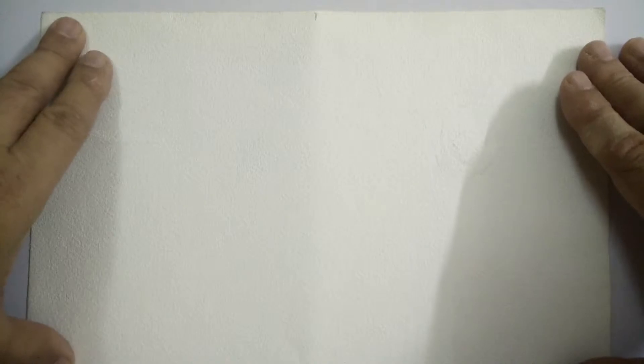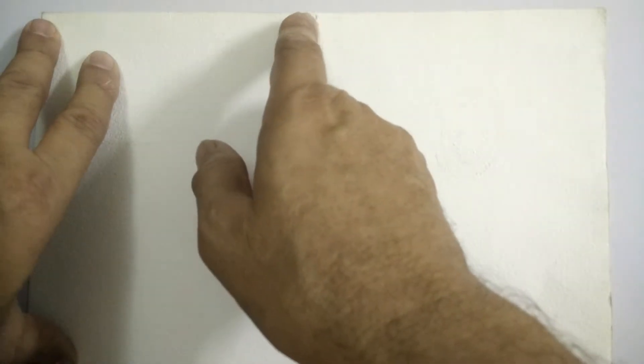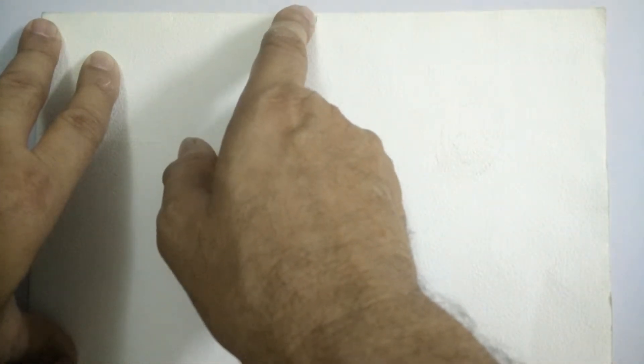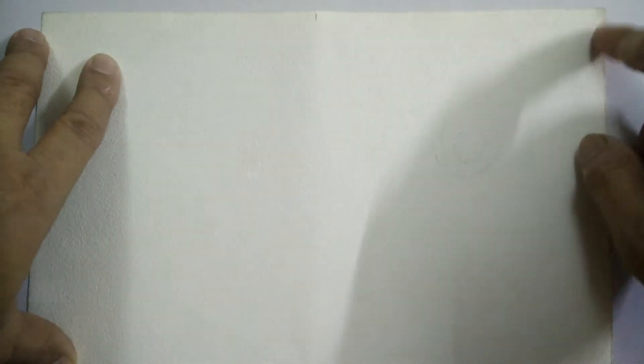So, I begin by first taking a 10 inch by 5 inch card and marking very softly with a pencil the midpoint from here to here and here to here. That means it will be 7 inches by 5 inches when folded.